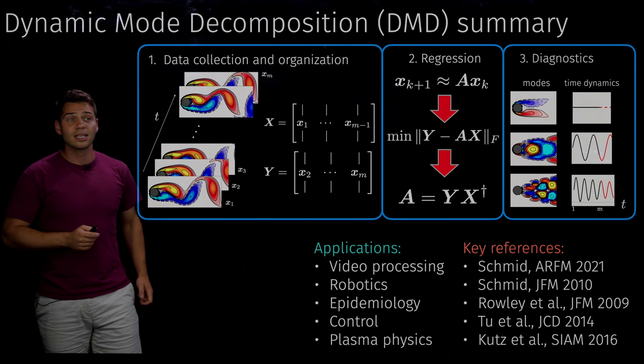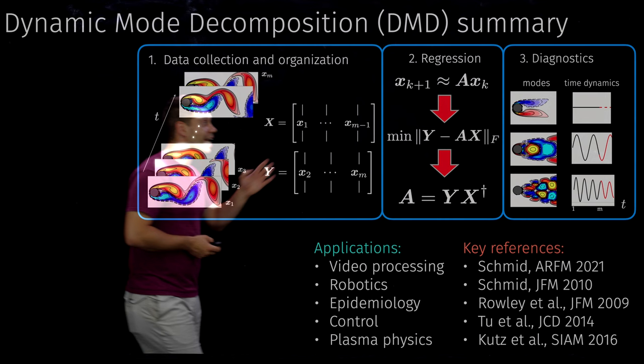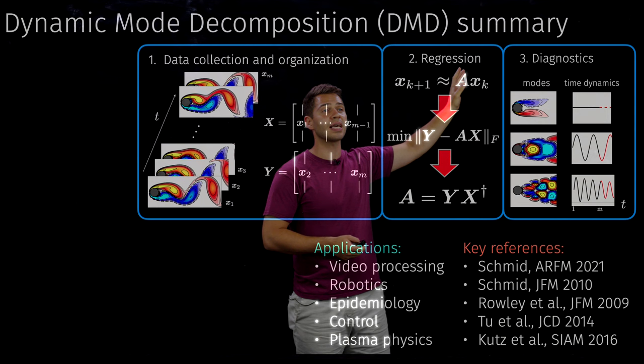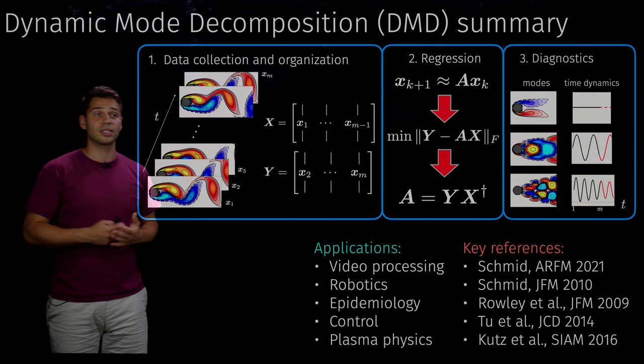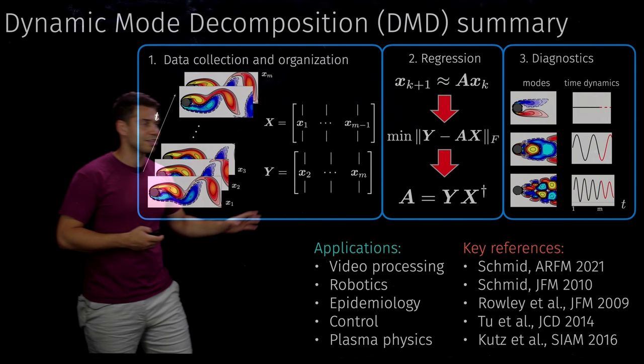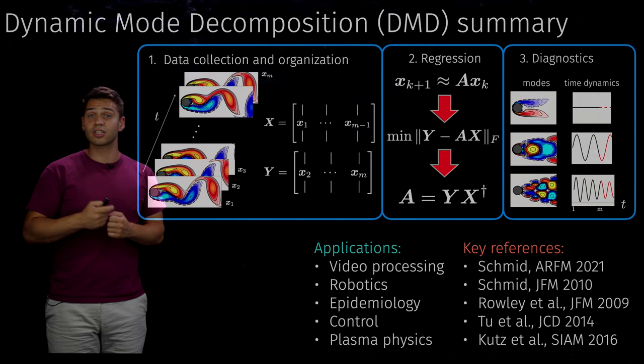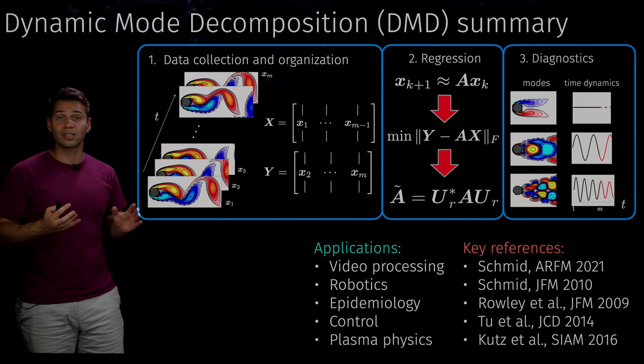To find A, we set up an optimization problem where we minimize the difference between Y and AX — finding an A that gives the best possible predictions, mapping X_k as close as possible onto X_{k+1} in the Frobenius norm sense. This is a least squares problem with the analytic solution A = Y times the Moore-Penrose pseudo-inverse of X. In practice the matrices are extremely large, so we project A onto a low-dimensional subspace instead.